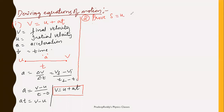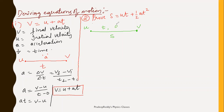Coming to the next equation, we should now prove s = ut + ½at². For this, let me consider a particle or body which is starting initially with initial velocity u, traveling up to a certain distance s, finally arriving at velocity v. It takes time t to travel this distance, and the body is moving with uniform acceleration. We already have the first equation of motion: v = u + at — let me take this as equation 1.